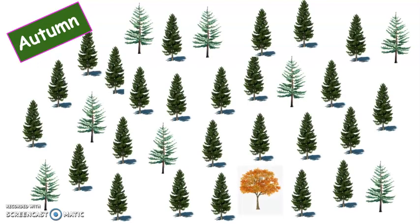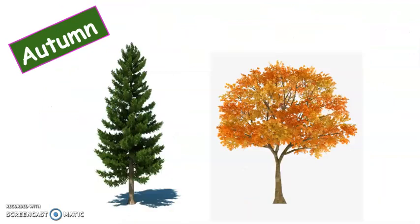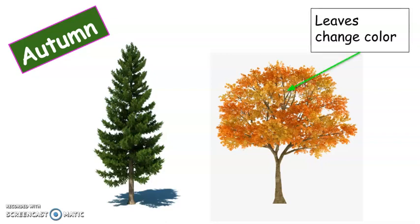Next. Okay, now it is autumn. Are you ready to find the deciduous tree? Go! There it is. This is the deciduous tree because in autumn, deciduous trees change color. See how their leaves are orange? The evergreen tree is green.